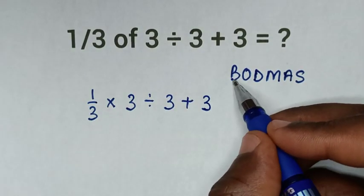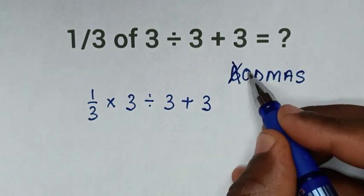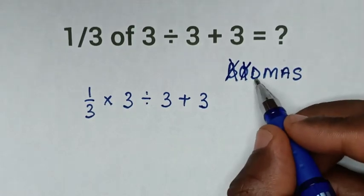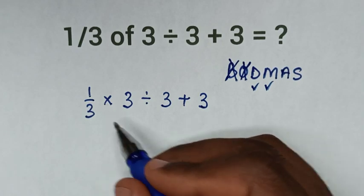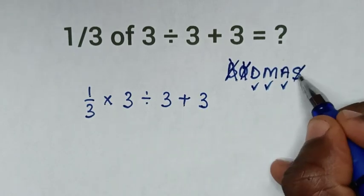In here, B is bracket. From this problem we don't have bracket, order, or exponent. But we have division here, we have multiplication, and we have addition. We don't have subtraction.